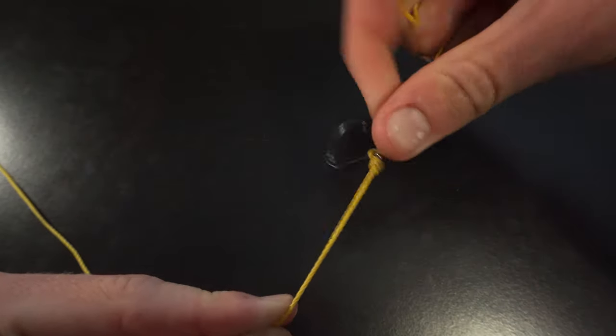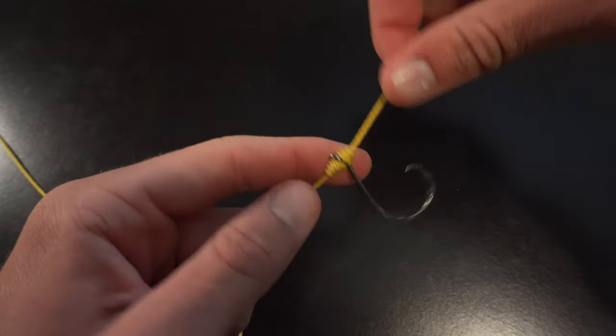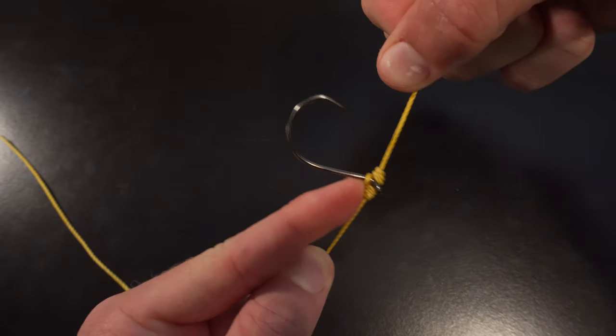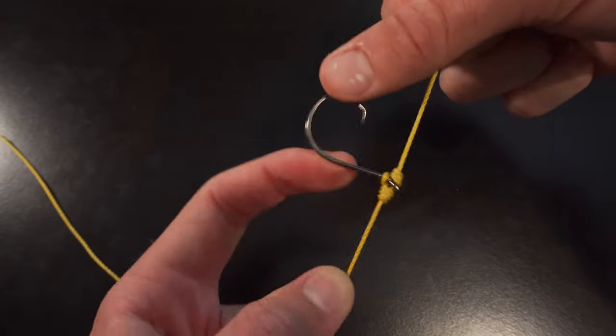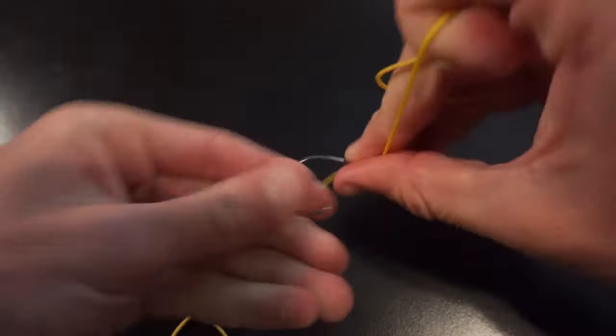I mean if you notice, look at how well that drop shot hook is holding. I mean this is a catfish hook. But if you notice, look at how it is forcing that hook upright. There is no way that hook is bending up or down or side. I mean it doesn't matter.